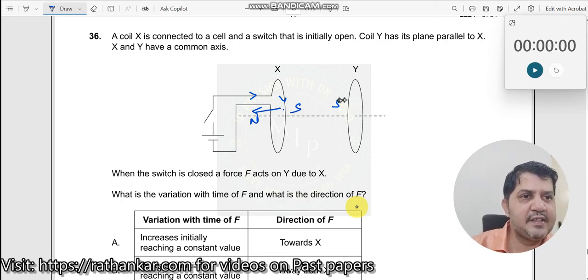It rejects the field over here. It becomes a south pole. As a result of it, there is a repulsion being seen. There is a repulsion.